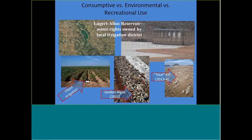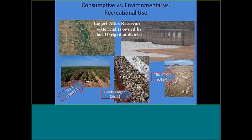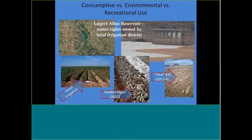Another example of consumptive versus environmental and recreational use is Lugard Altus Reservoir in southwest Oklahoma, where water rights are owned completely by the local irrigation district. It was drawn down as well — there's been very little rain in this area due to severe drought. The majority of the water is used to grow cotton, and the lake was specifically built to provide irrigation water to cotton growers. This led to a golden algae fish kill in 2011 and a total kill related to drought from 2013 to 2014. We recently worked another kill in what you would call the many farm ponds the lake has now become — somewhat connected hydrologically but essentially their own little systems. That lake, much like Canton Lake, is near 0% of its conservation pool.